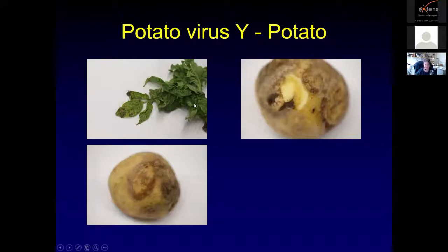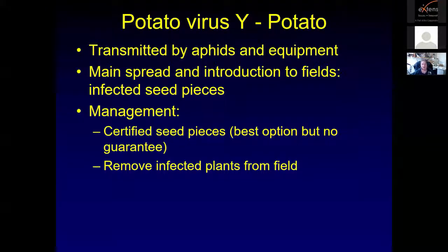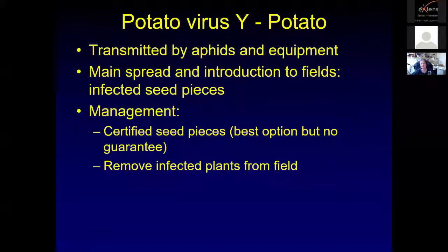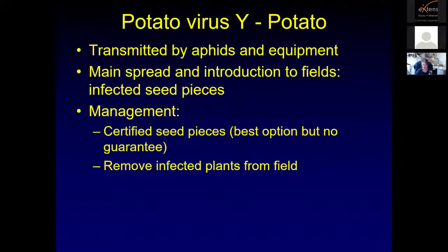Potato virus Y is transmitted by aphids and can also be transmitted by equipment — if you go through with a cultivator with sap of infected plants and cause small wounds on healthy plants, you could transmit it. Aphid transmission is more secondary in the field. If you have initially infected plants that came from infected seed pieces, aphids could move the virus throughout your field. The main introduction into fields is usually through infected seed pieces. Getting certified disease-free seed pieces is your best option, though there's no guarantee. Remove infected plants from the field so the virus cannot be spread by aphids.